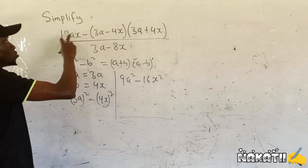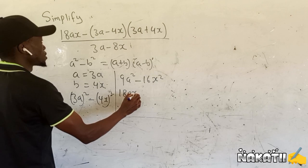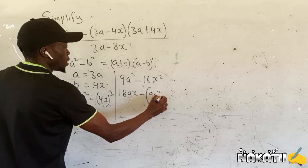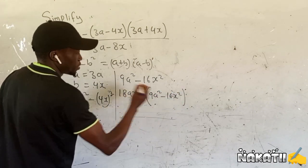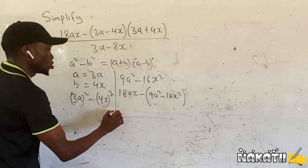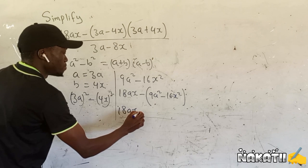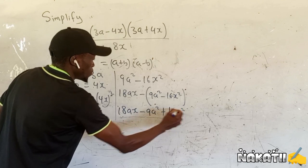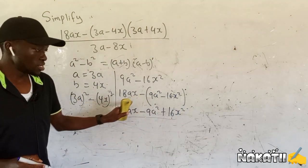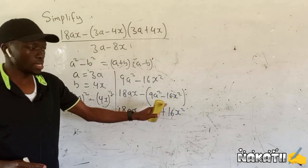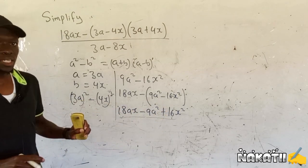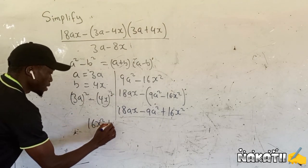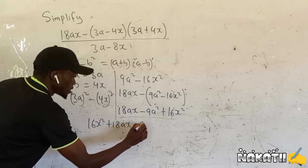Hence, you are going to have now, when you have this one, this will be 18ax minus, then inside we have 9a squared minus 16x squared. When you simplify or open this bracket, you're going to have 18ax minus 9a squared plus 16x squared. We can rearrange this one because when an expression has the highest powers of two, it becomes a quadratic expression. Hence, this one can be written as 16x squared plus 18ax minus 9a squared.